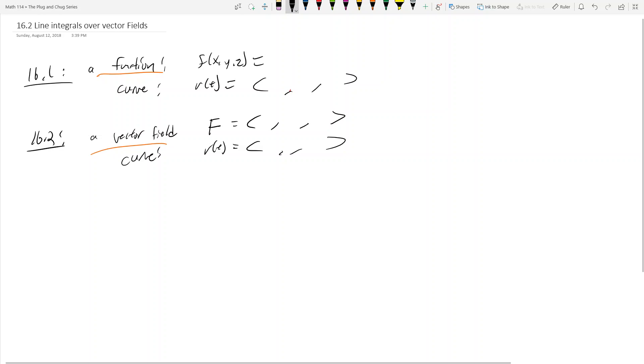Let's take a look at 16.2, number 19. And the problem is just find the work done by F over the curve. And then they give you the curve as well. So F is equal to xy, y, negative yz. And then r of t is equal to t, t squared, t, and then you've got 0 to t to 1.